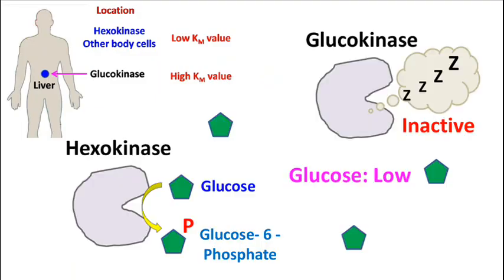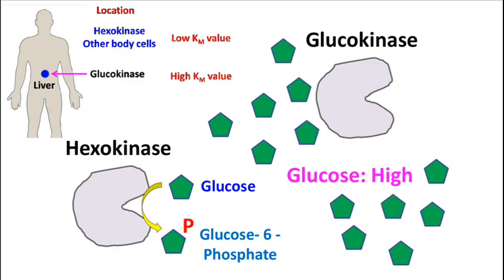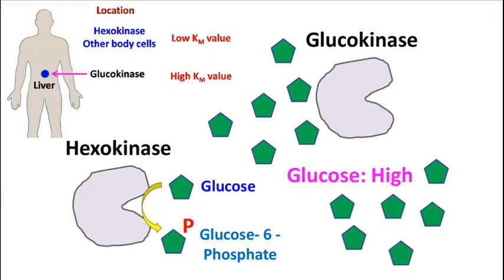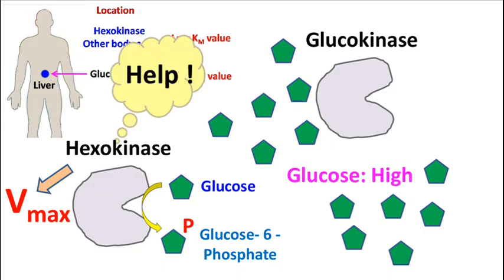This means hexokinase carries out the reaction at low concentration of glucose, while glucokinase still waits for the glucose concentration to increase. When glucose concentration is high enough, hexokinase will be working at its maximum velocity to phosphorylate glucose to glucose 6-phosphate. At high concentration of glucose, glucokinase gets activated and phosphorylates glucose.